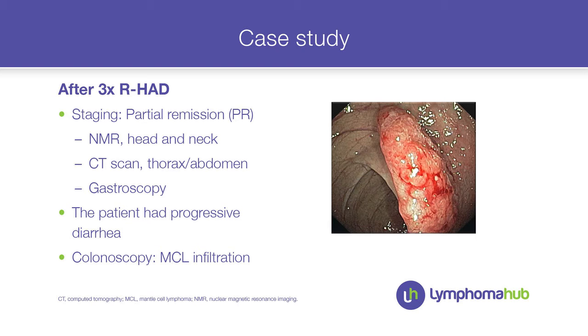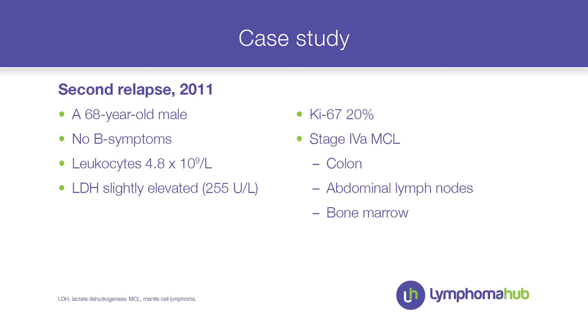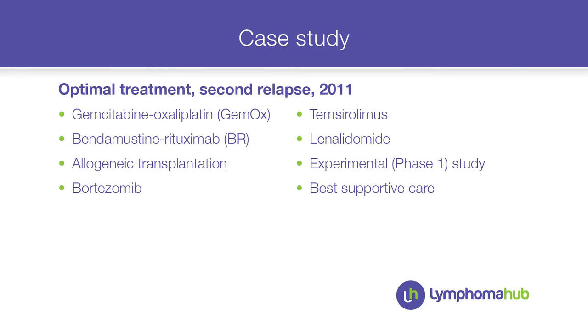But unexpectedly, after only three cycles we observed progressive diarrhea. The reason was typical GI involvement of the colon by mantle cell lymphoma. Now we are talking about a 68-year-old male at second relapse in 2011. Besides diarrhea, he had no B symptoms, leukocytes were normal, and LDH was only slightly elevated — still advanced-stage disease.